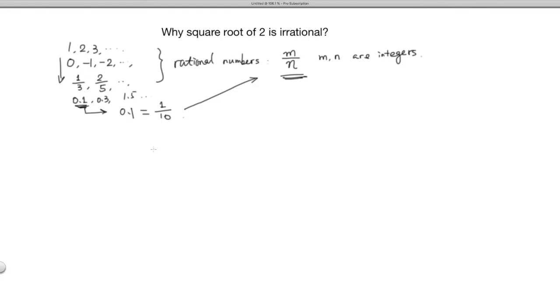And then, in around 300 BC, people realized that there are numbers that are not rational numbers. And that was a big surprise.